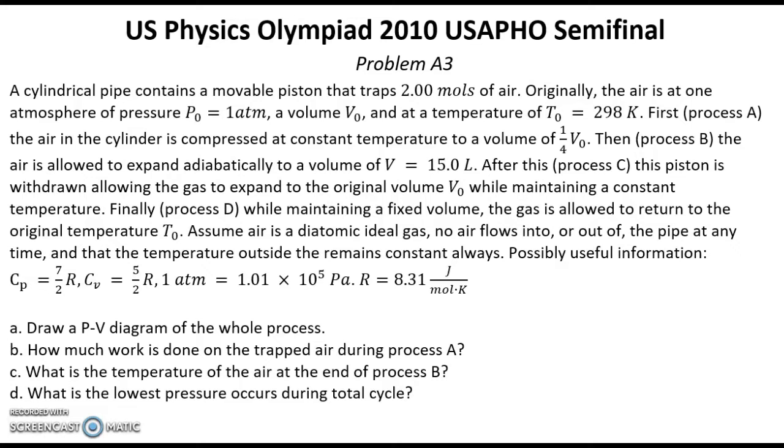Questions: A. Draw a PV diagram of the whole process. B. How much work is done on the trapped air during process A? C. What is the temperature of the air at the end of process B? D. What is the lowest pressure that occurs during the total cycle?